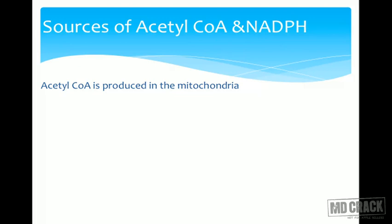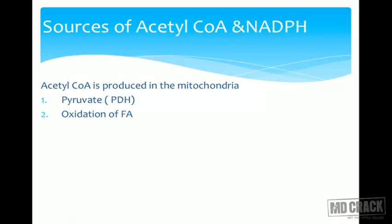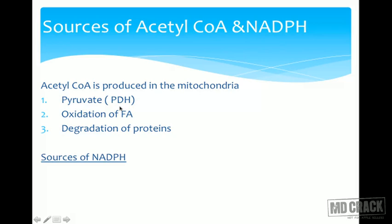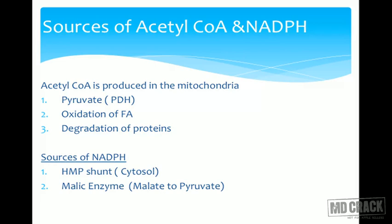There must be a mechanism to transport acetyl-CoA out of the mitochondria. Acetyl-CoA can also come from oxidation of fatty acids, though this is a futile cycle, and from protein degradation — but both are very minor contributors. The main source is the pyruvate dehydrogenase complex. Sources of NADPH include the HMP shunt (in the cytosol) and the malic enzyme, which converts malate to pyruvate.